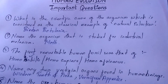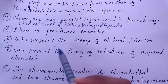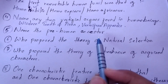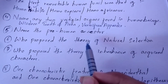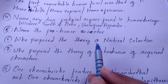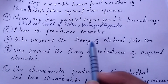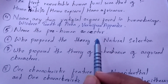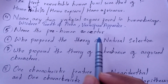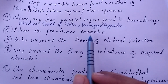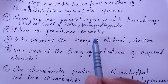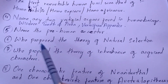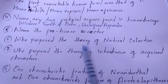Question number five: name the pre-human ancestor. We want you to write this answer in the comment section below and we will come back to you, so do not forget to answer this in the comment section.